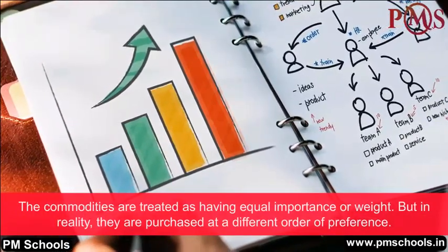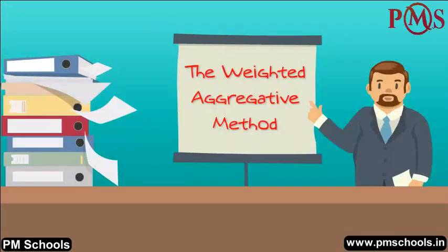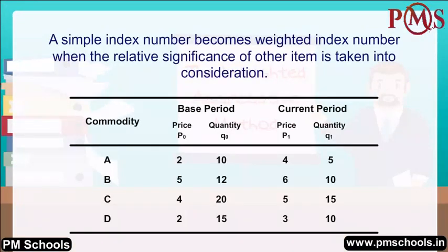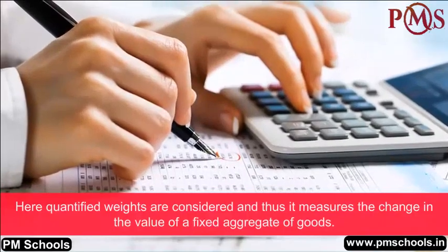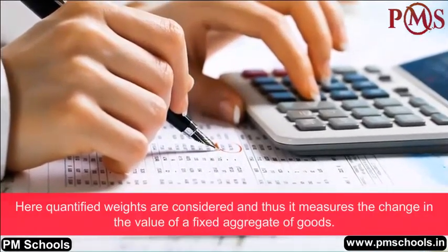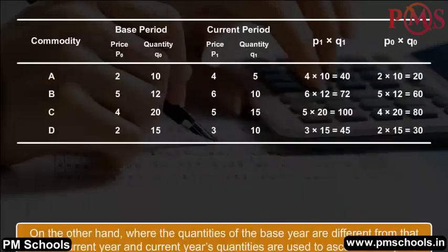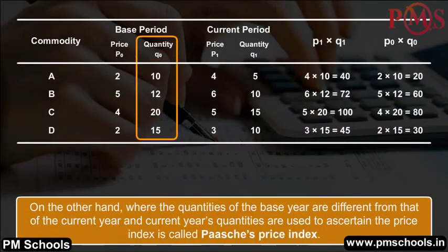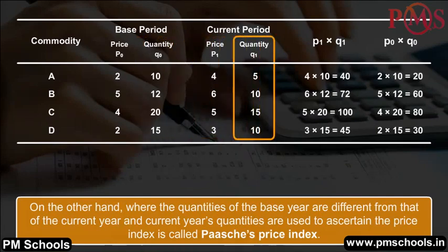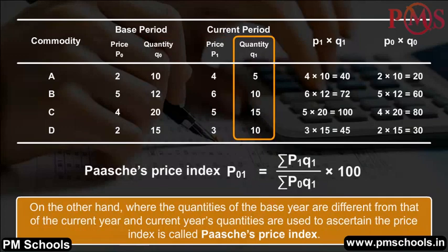The Weighted Aggregative Method. A simple index number becomes a weighted index number when the relative significance of each item is taken into consideration. Quantified weights are considered, measuring the change in the value of a fixed aggregate of goods. The weighted aggregative price index using base year quantities as weights is known as Laspeyres' price index, while using current year quantities is called Paasche's price index.